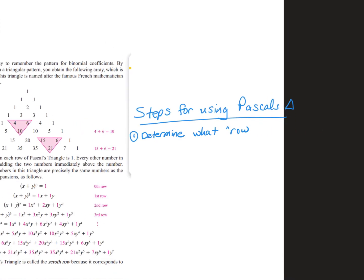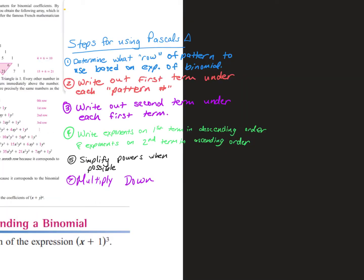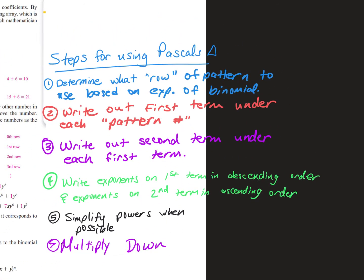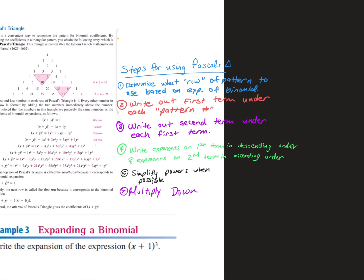Now let's write down the steps for expanding using Pascal's Triangle. You're going to: first, determine what row of Pascal's triangle to use based on the exponent; second, write out the first term under each pattern number; third, write the second term underneath; fourth, write the exponents of the first term in descending order; fifth, write the exponents of the second term in ascending order; then simplify the powers and multiply down.